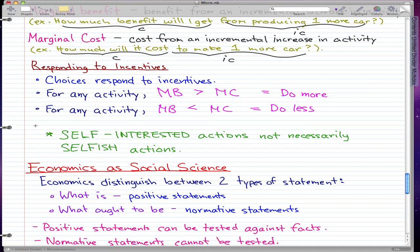Economists always view people as acting in their self-interest. When we talk about self-interest, we probably think of people as really selfish. But when we're talking about microeconomics, self-interested actions are not necessarily selfish actions. That's what you need to know and get into your head.